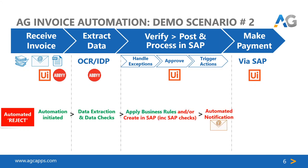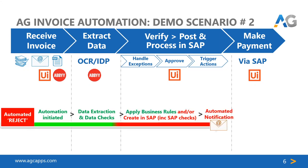Moving on to our second scenario. This involves an exception, and we shall see how the robot, while processing the extracted data, refers to business rules in the backdrop. It recognizes the PO number — though a valid string of six numeric characters — is still not the right one, as it's not in the allowed number range of POs. An automated email therefore goes to the vendor with a message clarifying the reason for rejection. Now let's see how it happens in the demo.